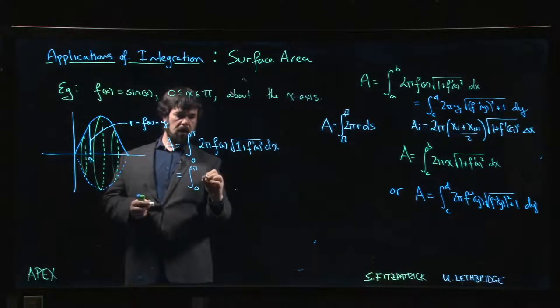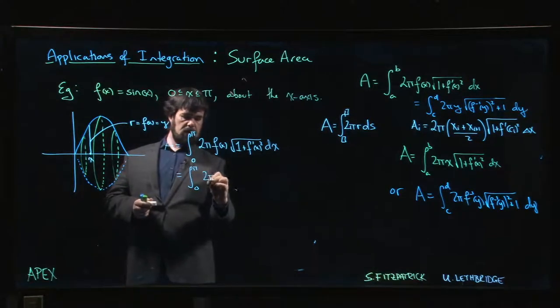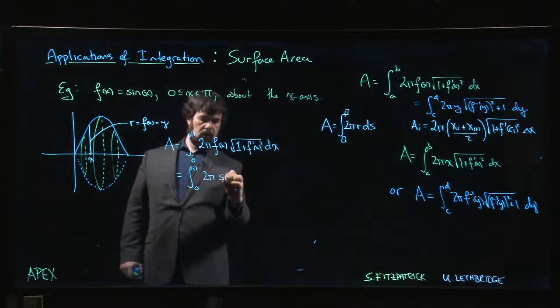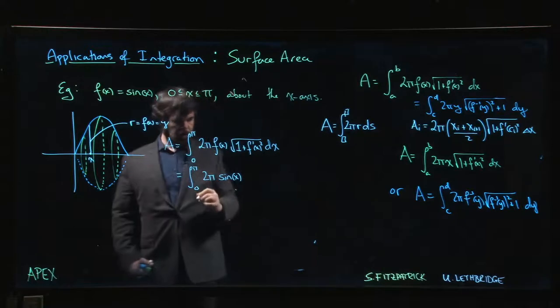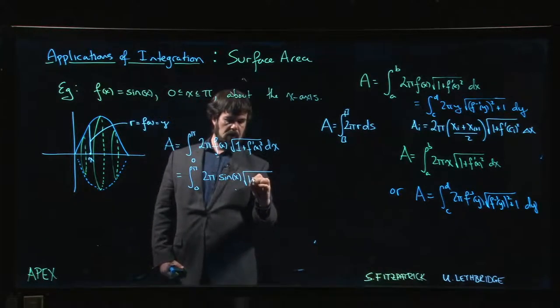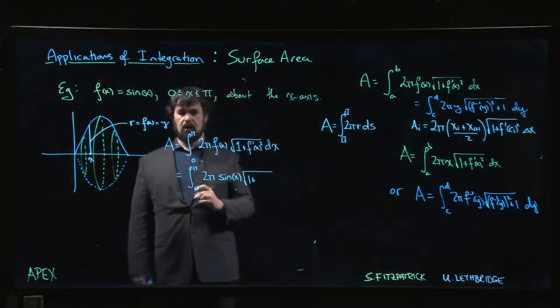0 to pi, so we have 2 pi, so f of x is sine of x. Under the square root, we have 1 plus, so we take the derivative,